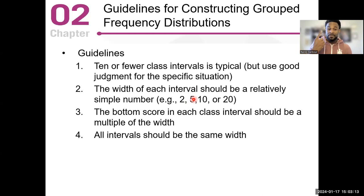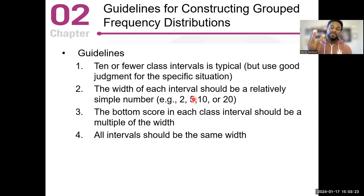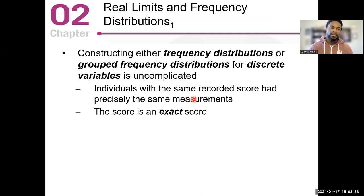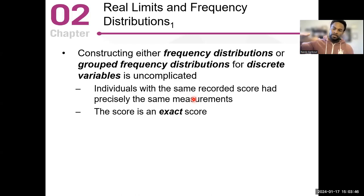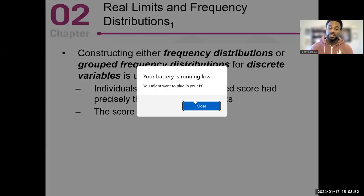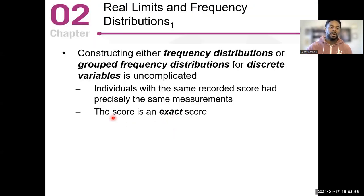Zero to four is five units: zero, one, two, three, four. Five to nine: five, six, seven, eight, nine — five units, a class number of five. When you construct a frequency distribution for discrete variables, all you're doing is adding categories and grouping those categories. Individuals with the same recorded score will have precisely the same measure. The score is the exact score.